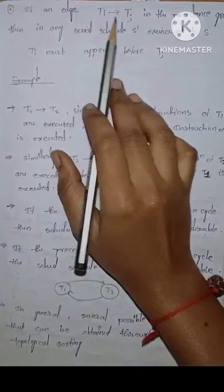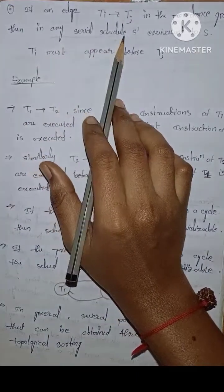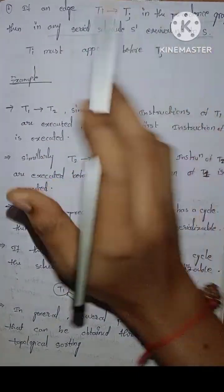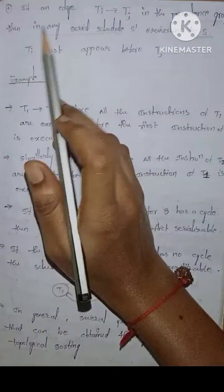If an edge Ti gives Tj in the precedence graph, then in any serial schedule S prime is equivalent to S. If Ti gives Tj in precedence graph, then any serial schedule S prime is equivalent to schedule S.